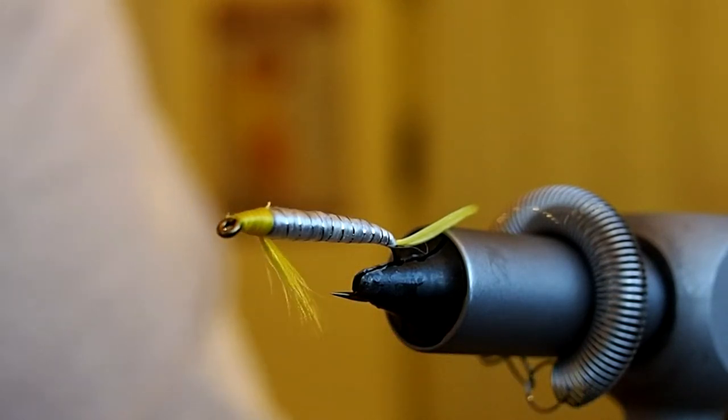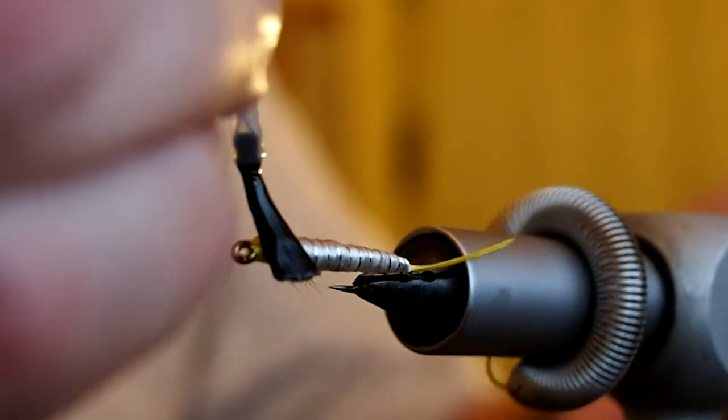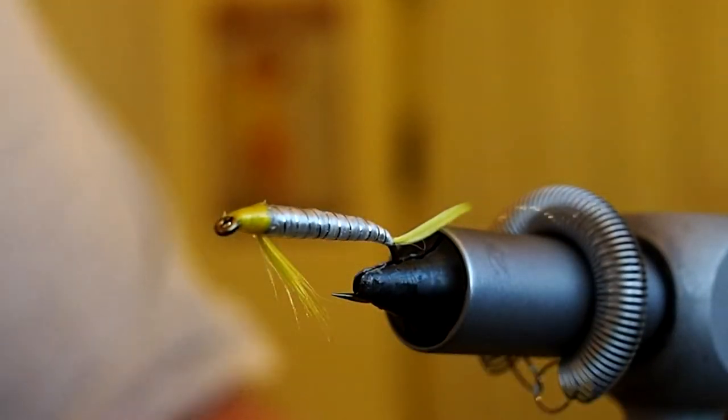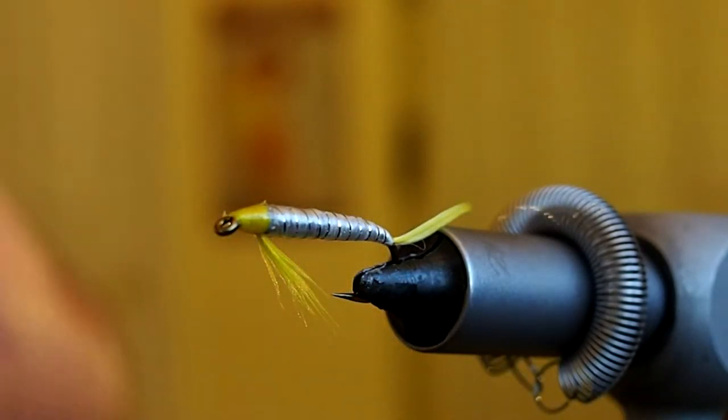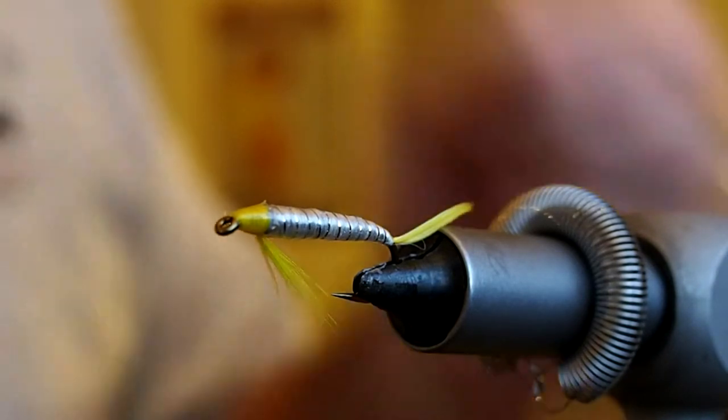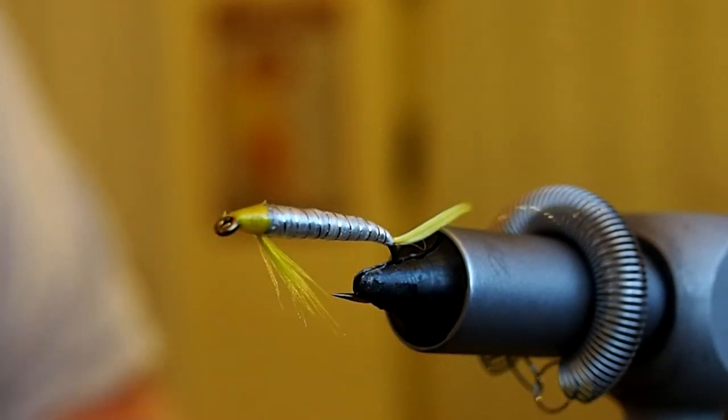Alright, next I'm just going to touch the head with some Sally Hansen's to seal the thread wraps. Alright, I'd say you could probably stop right there and have a very fishable fly. It's a good looking fly just like that. The original does call for some eyes. I think the head is a little small to try to get an iris and pupil. So I think I'm just going to do a red eye. But first we need to let our Sally Hansen's dry.